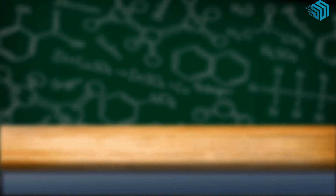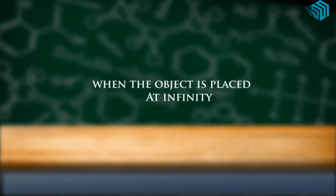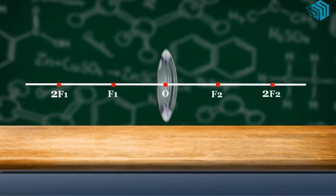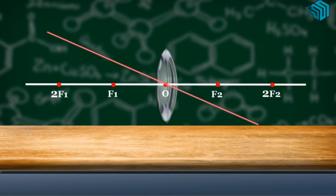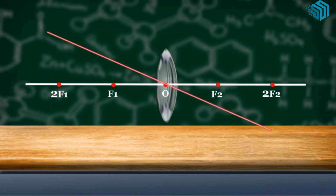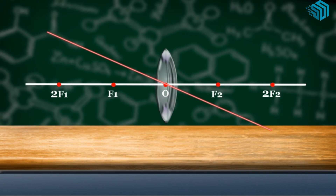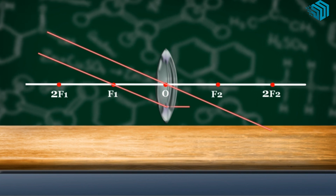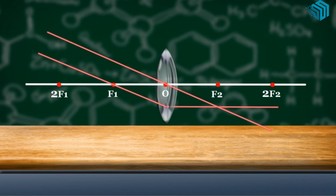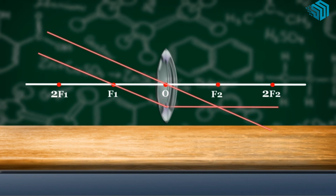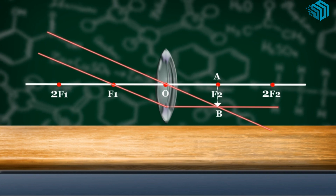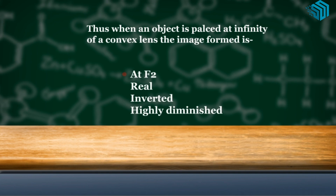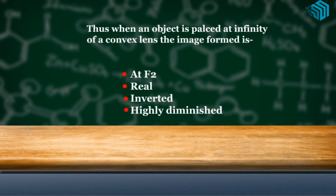When the object is placed at infinity: a ray passes through the optical center without any deviation, and a ray passing through the focus emerges parallel to the principal axis after refraction. The two refracted rays meet at the focus. The image formed is at F2 — inverted, real, and highly diminished in size.